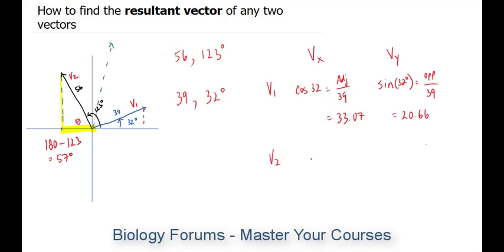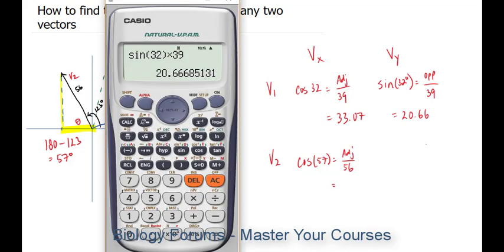So for v2, we want to find the x component, which is the adjacent. And we have the hypotenuse. Adjacent hypotenuse spells out cosine. So cosine of 57, we're looking for the adjacent. The hypotenuse is 56. The answer here is 56 times cosine of 57, which equals 30.49.